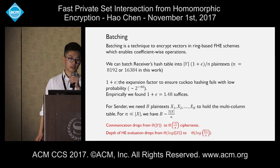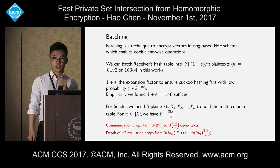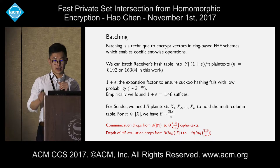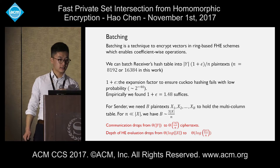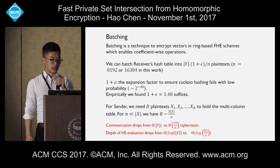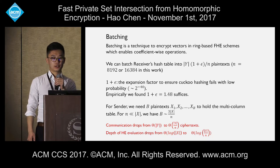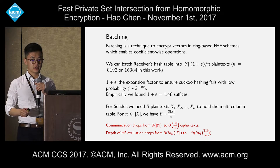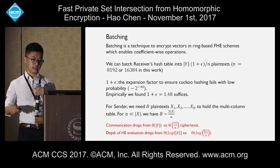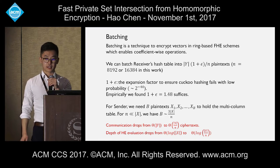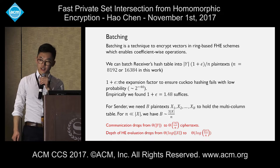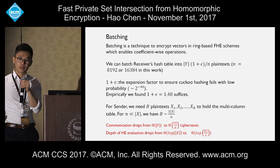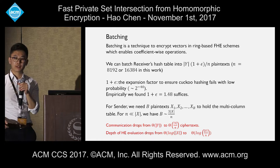Moving on to another optimization: batching. This is a commonly used technique in FHE where you can use one ciphertext to encode not just a number but a vector of numbers, achieving SIMD functionality where addition and multiplication are done coefficient-wise. For our parameters, we can batch the receiver's hash table into the receiver's set size times a small expansion factor divided by n plaintexts. Here n is relatively large, about 8,000 or 16,000. Using three hash functions, we found empirically we only need a 1.48 blowup to fit all receiver elements into the hash table.